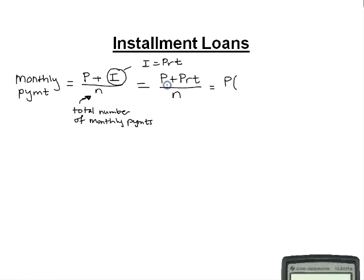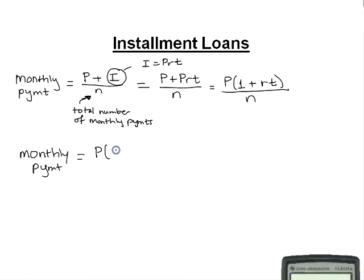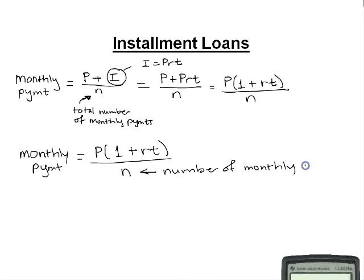P is common to both terms so we can factor it out. If you factor P out of P, it leaves one. If you factor P out of P·R·T, it leaves R·T. So we have P times (1 + R·T) over N. For an installment loan, your monthly payment is P times (1 + R·T) over N, where N is the total number of monthly payments, R is the annual rate, and T is the time in years.